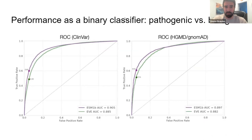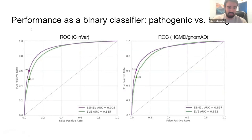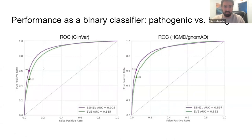For a rigorous binary classification evaluation of ESM1B as pathogenic versus benign, we look at ROC curves. At a false positive rate of 5% — a common standard — we get a true positive rate of about 60% for ESM1B on both ClinVar and HGMD+gnomAD datasets, compared to about 50% for EVE. Integrating under the curve gives ROC AUC of about 90% for ESM1B and 88% for EVE, again across both datasets.